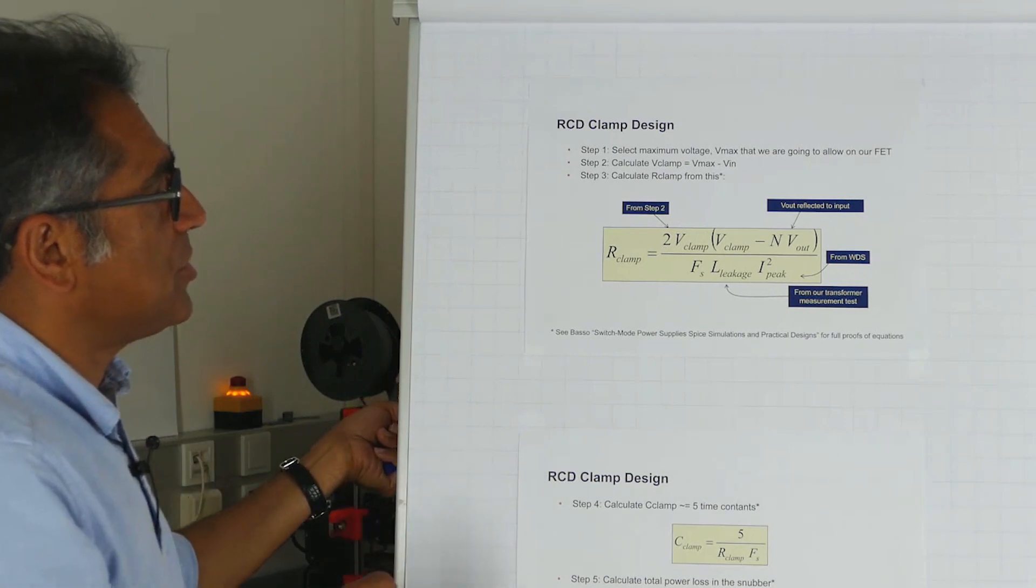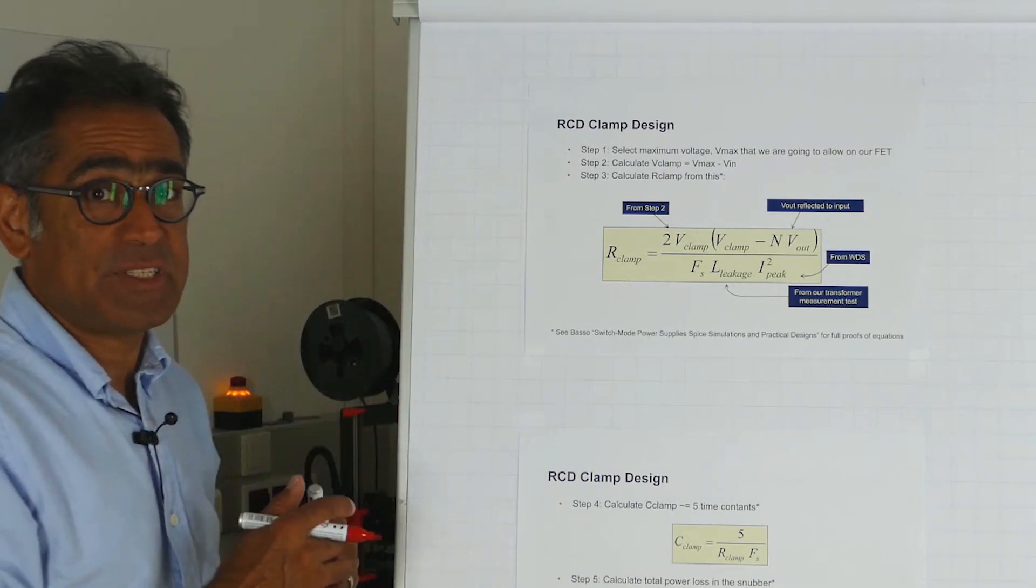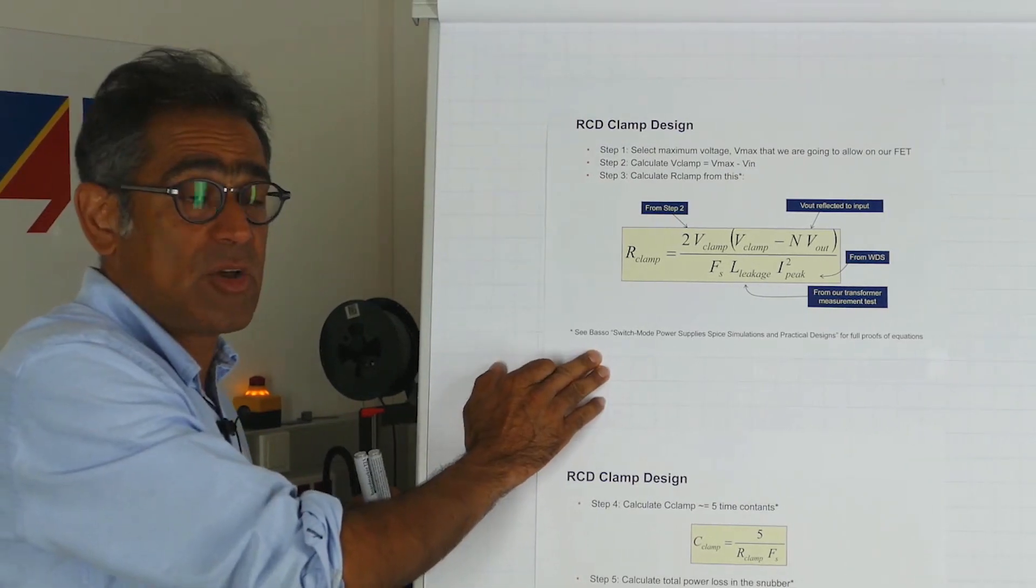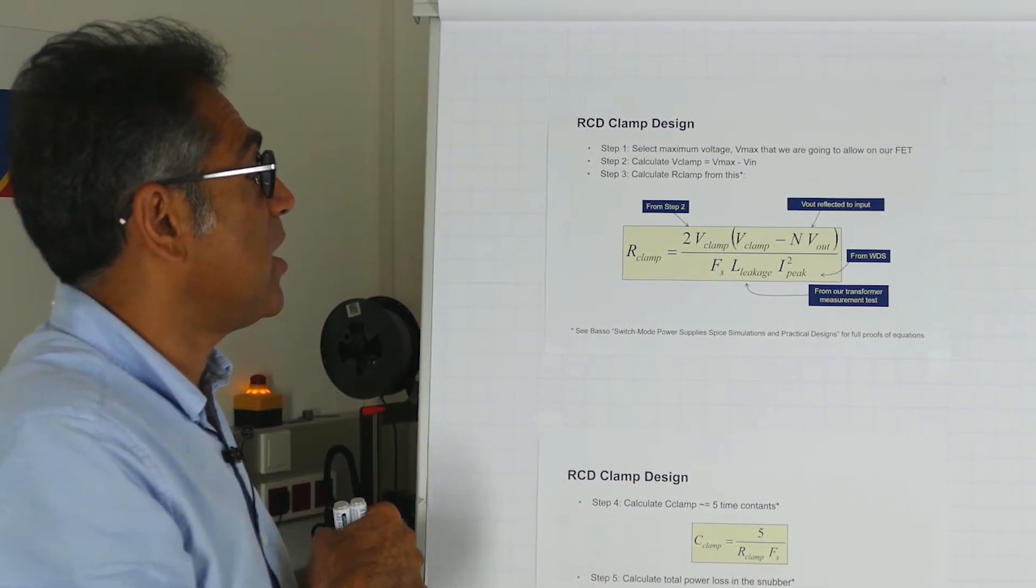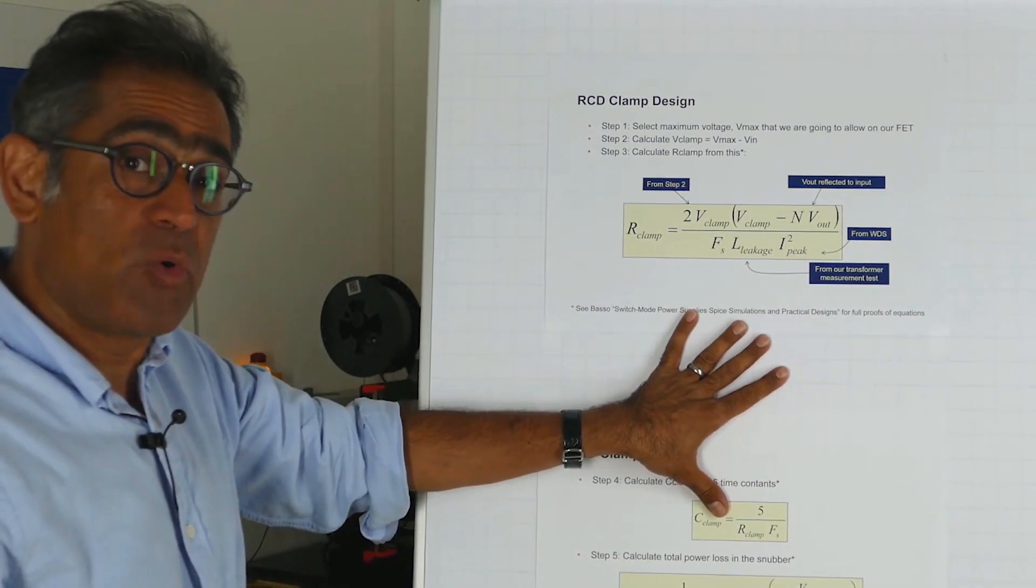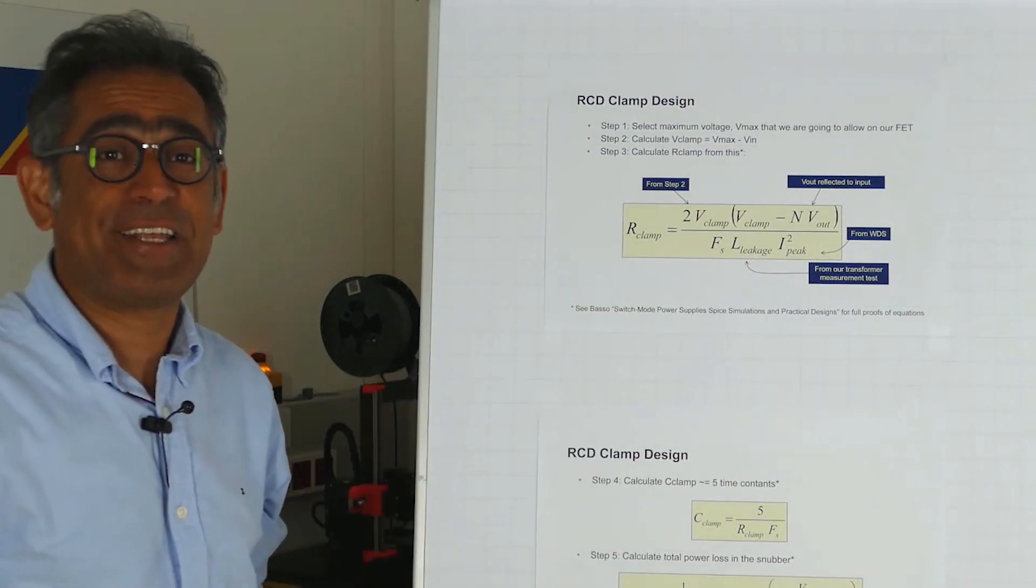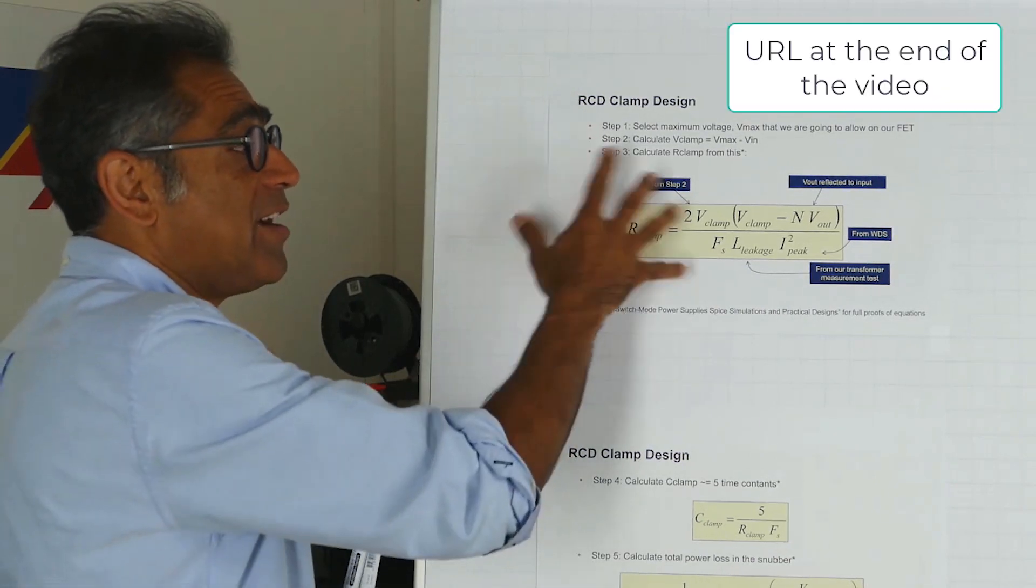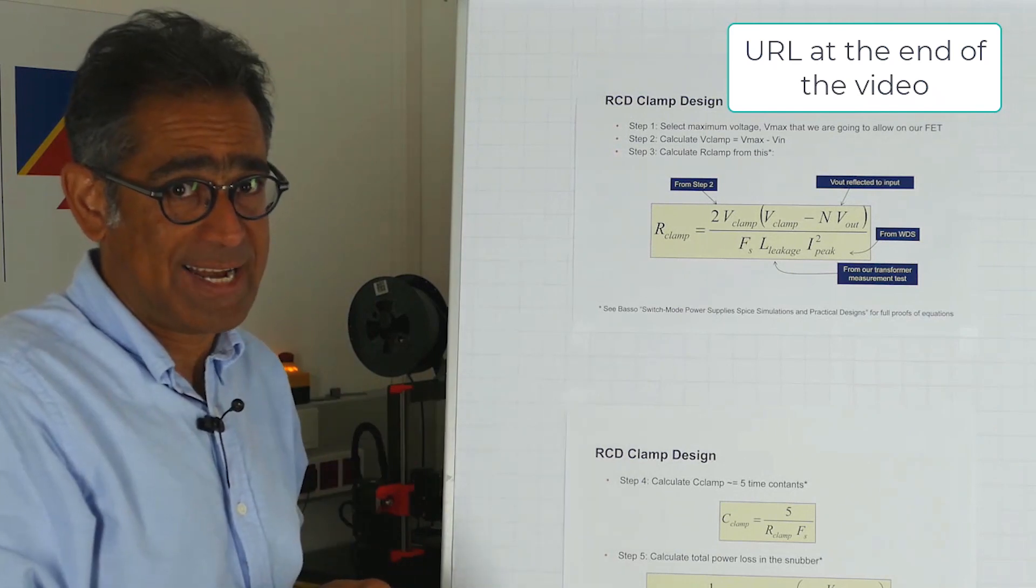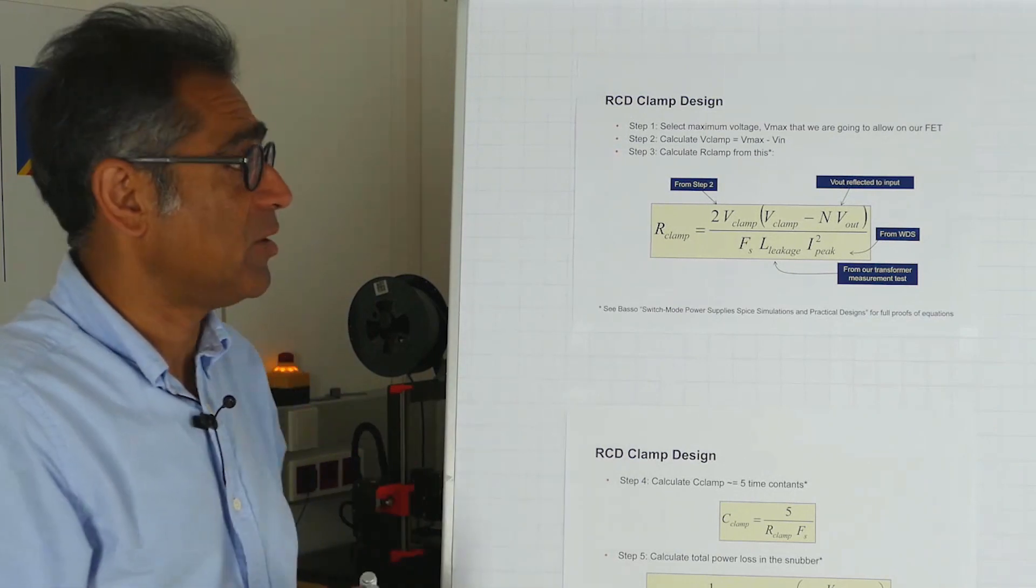And this is the equation that we need. First an acknowledgment: these equations are taken from the excellent book by Christoph Basso, which is the Switch-Mode Power Supply Spice Simulations and Practical Design. The proof is all in there, and also we have created a spreadsheet whereby you don't have to type these into a calculator. You can just type in the numbers and the spreadsheet will calculate them for you, and this is available for download.